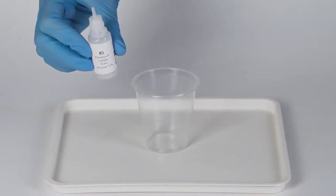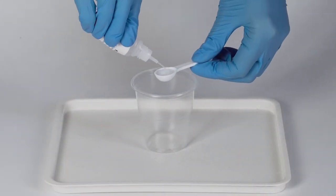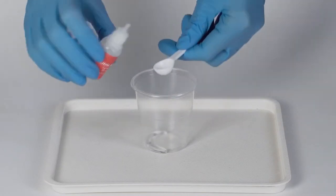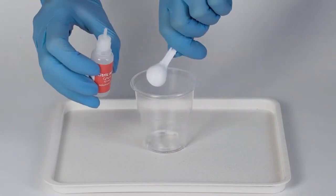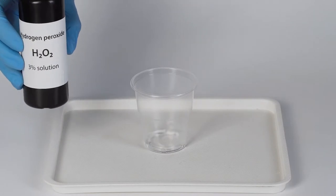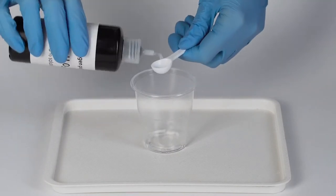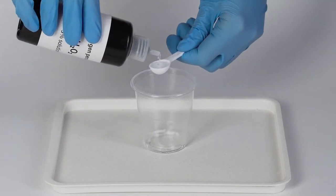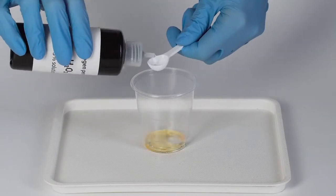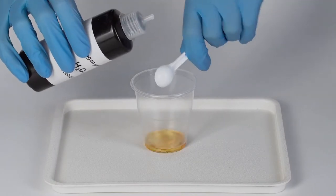Add one big measuring spoon of potassium iodide to the disposable cup. Then add one big measuring spoon of citric acid solution into it. Next, pour three big measuring spoons of 3% solution of hydrogen peroxide, which can be found at any pharmacy, into the cup.